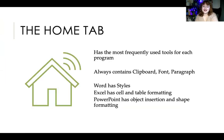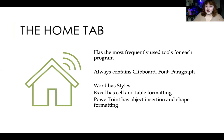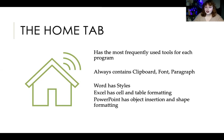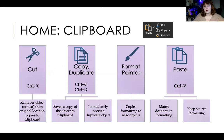Now the home tab — I'm going through the ribbon tabs left to right, covering shared ones first, then program-specific ones. The home tab has the most frequently used tools per program. For Word, that's text editing and paragraph formatting. Excel has cell and table formatting, sorting for data. PowerPoint has object insertion and shape formatting. The home tab always has clipboard, font, and paragraph sections — I'll talk about those three in more detail.